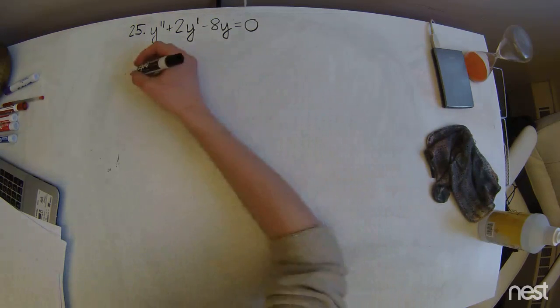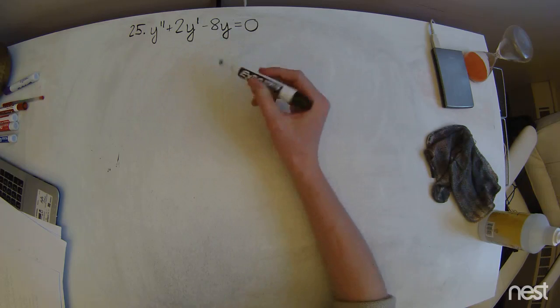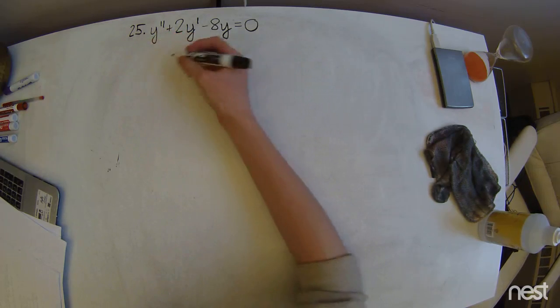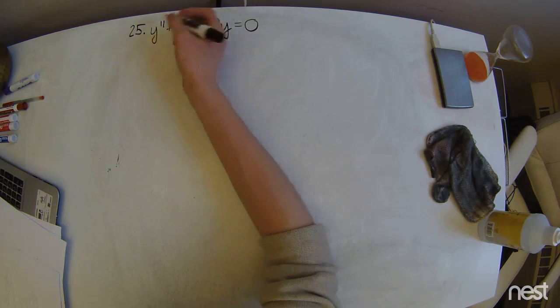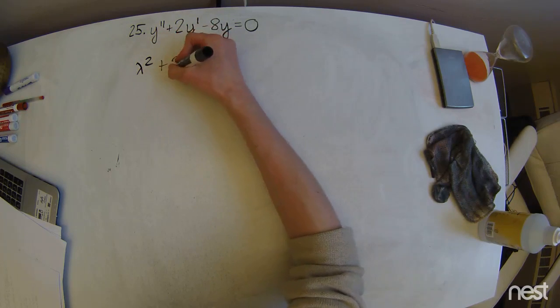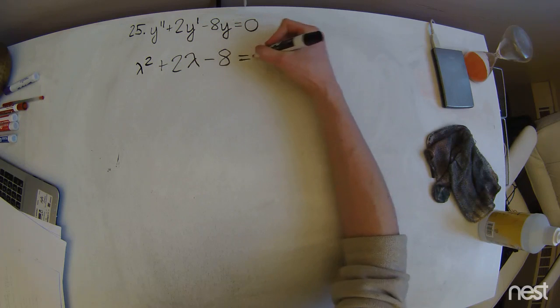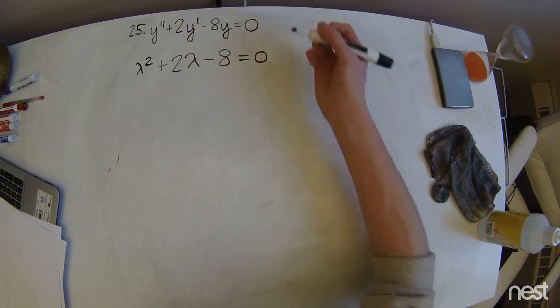So we're going to set up our characteristic equation, taking the coefficients of each of these terms here and multiplying them by the corresponding lambdas. So we're going to have 1 times lambda squared plus 2 times lambda minus 8 equals zero.